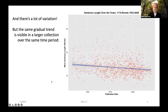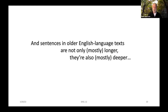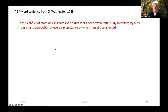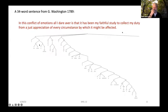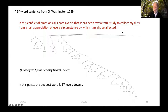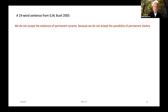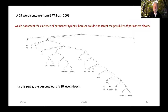Now, sentences in older English language texts are not only on average longer, they're also on average deeper. Here's a 34-word sentence from George Washington in 1789 — remember, the average length in that speech was 60, so this is not unusually long. I've run it through a parser which I believe has gotten all the structures correct. In this parse, the deepest word is 17 levels down from the root. Here's a 19-word sentence from George W. Bush in 2005 and its parse. In this parse, the deepest word is just 10 levels down.